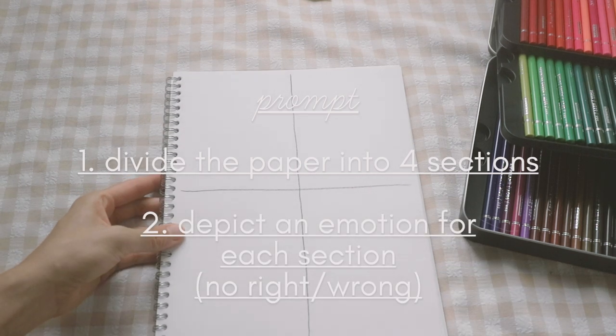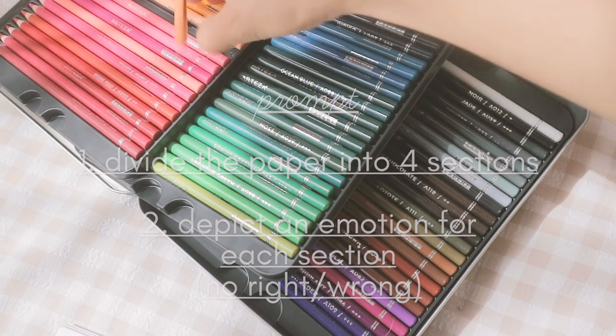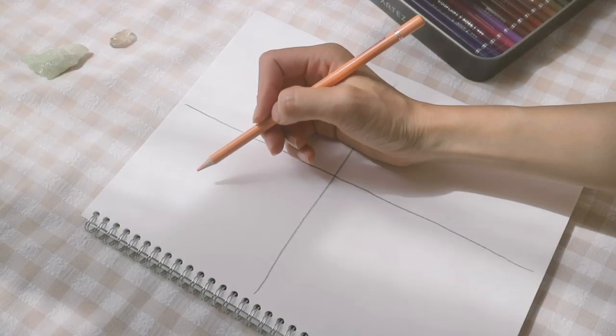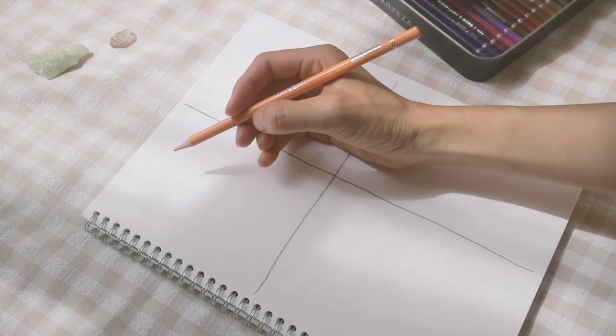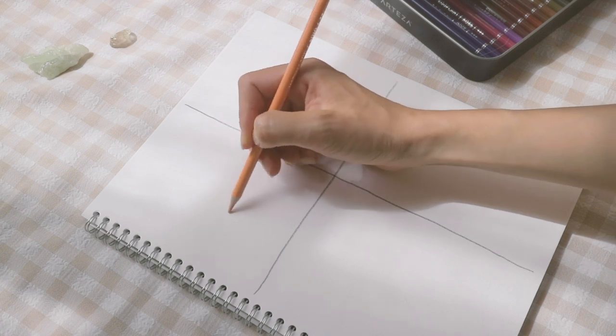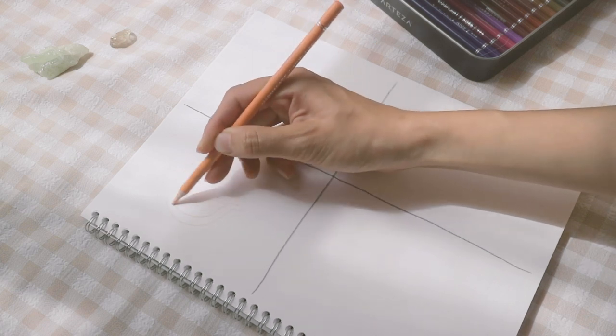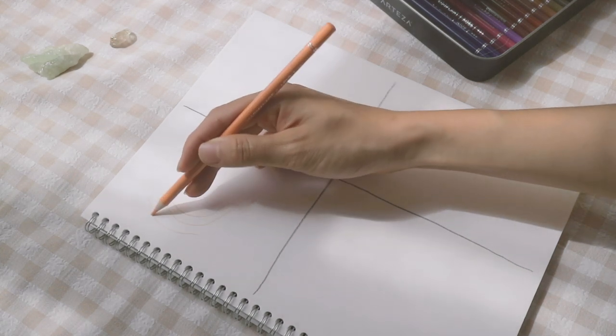Then depict an emotion for each of the part. Each picture or each emotion should be as different from one another as possible in their use of line, color, and form.